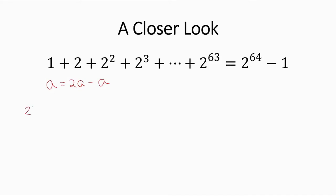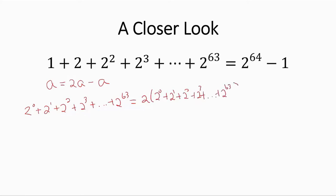So we have this amount: 2 to the power of 0, plus 2, plus 2 squared, and so on. Now, what we're going to do is first multiply this by 2, giving us terms up through 2 to the power of 62 and then 2 to the power of 63, and then subtract the original amount — 2 to the power of 0, minus 2, and so on. We are subtracting all those quantities inside the parenthesis, up to 2 to the 63rd power.